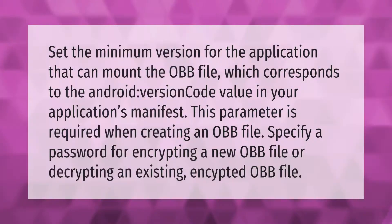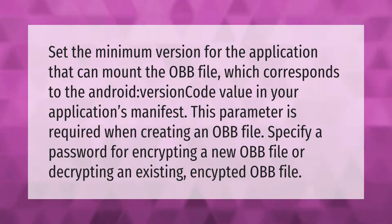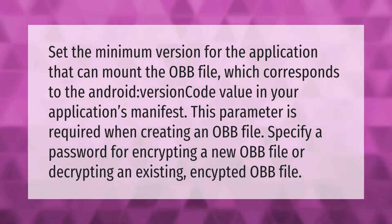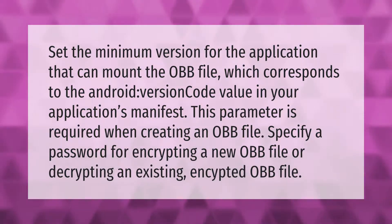Set the minimum version for the application that can mount the OBB file, which corresponds to the Android version code value in your application's manifest. This parameter is required when creating an OBB file. You can also specify a password for encrypting a new OBB file or decrypting an existing encrypted OBB file.